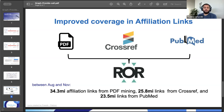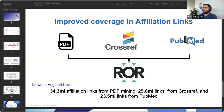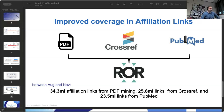Based on this activity between August and November, in the versions of the graph released during this period, we added 34.3 million affiliation links from PDF mining, 25.8 million links from CrossRef, and 23.5 million links from PubMed. There are overlaps between these sources, and we already had affiliation links from Microsoft Academic — but Microsoft Academic has been discontinued, making these new approaches critical. We now have affiliation links for more than 79 million research products in total, and this number is expected to grow month by month as we process new CrossRef, PubMed, and PDF versions.